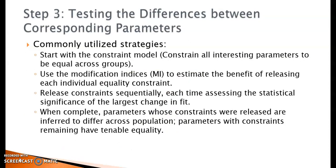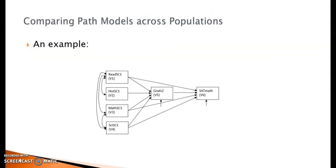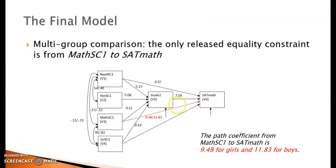When the analysis is complete, model parameters with released constraints are inferred to be different across populations. Parameters with remaining constraints have tenable equality. In this example, the only released constraint is the path from math self-concept to SAT math. Based on the values of the path coefficients, we can conclude that the impact on SAT math scores from math self-concept is stronger for boys — the higher their self-concept on math, the higher their SAT math scores. Although the same relation is observed for girls, the magnitude of the impact is significantly weaker.